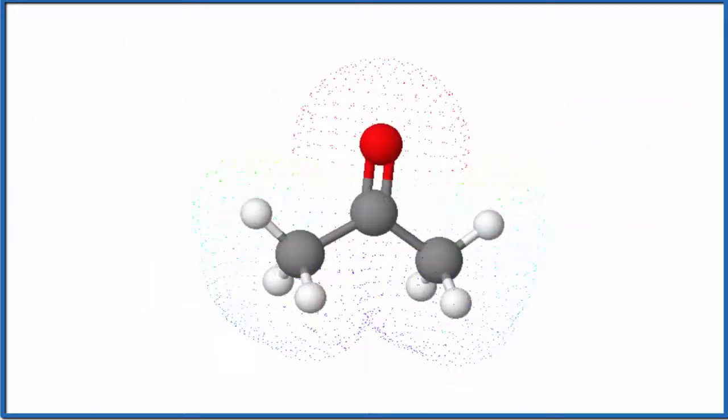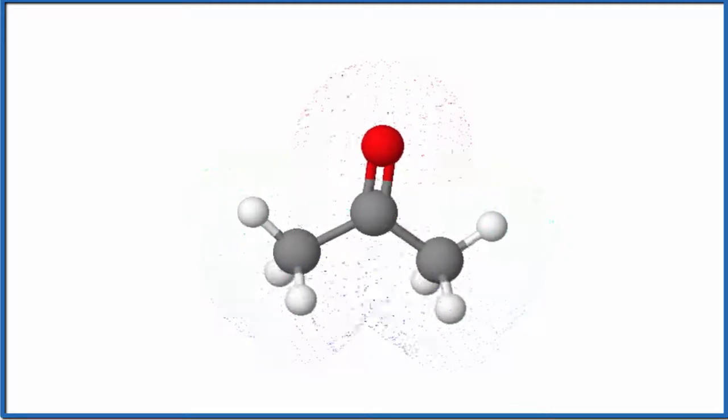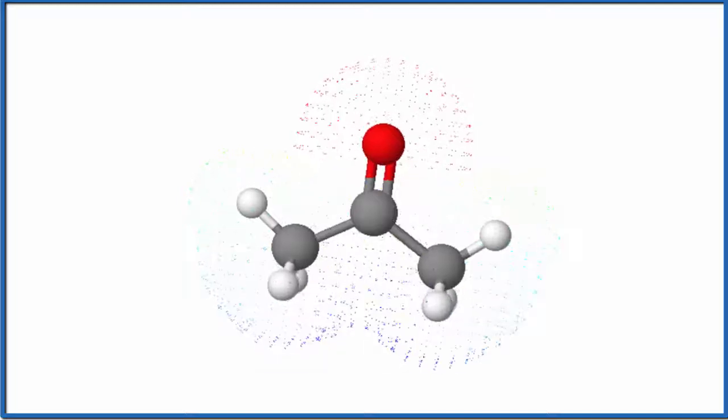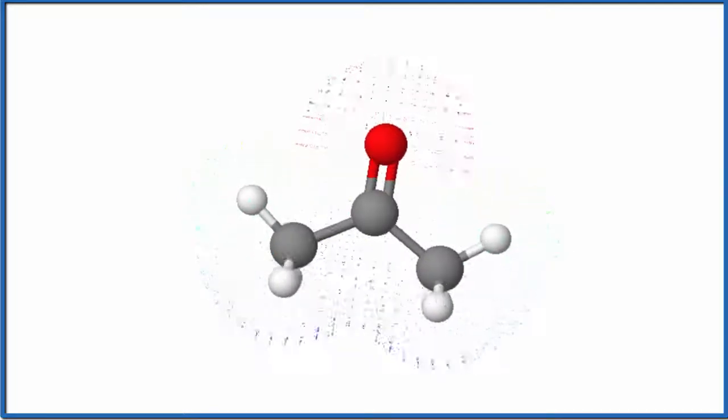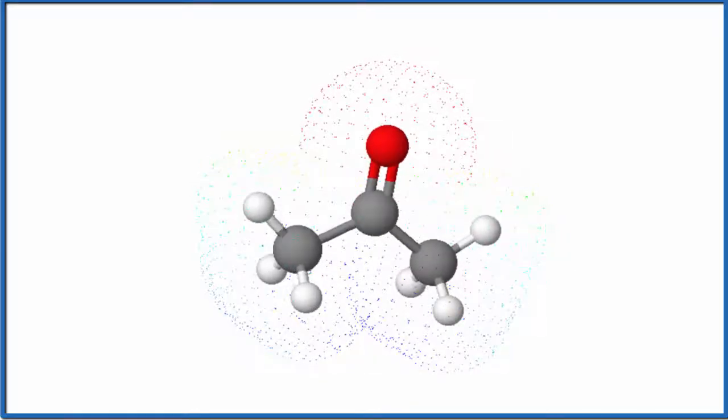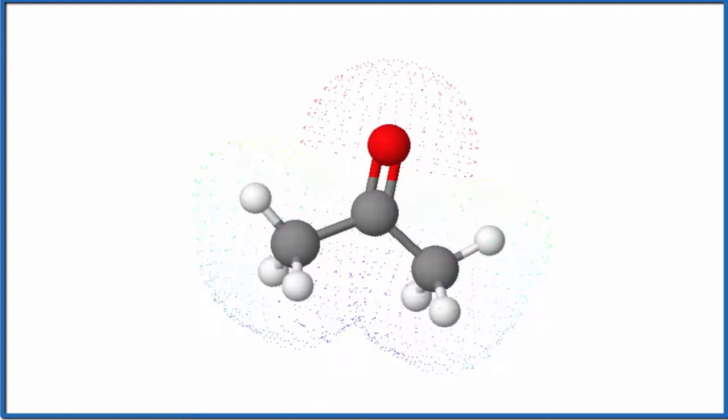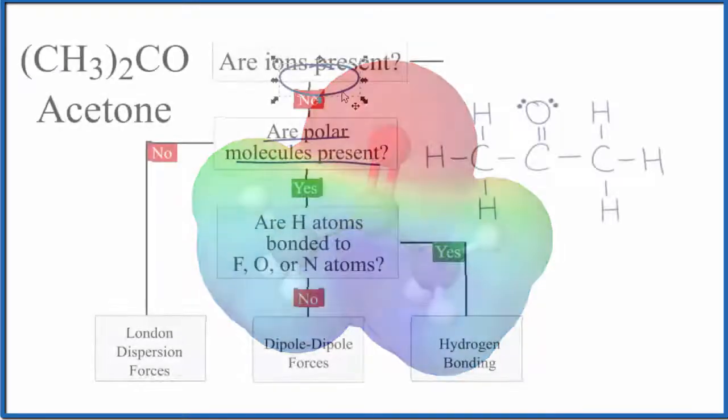Here's our acetone molecule: the red is the oxygen, white hydrogens, and the carbons are the gray or black. We can see the oxygen on top is more electronegative, so we'd expect this to be a polar molecule with a more negative side on top where the oxygen is. Let's take a look at the electrostatic surface of the molecule. That red is more negative, and down here with the hydrogens it's more positive. So acetone is a polar molecule.